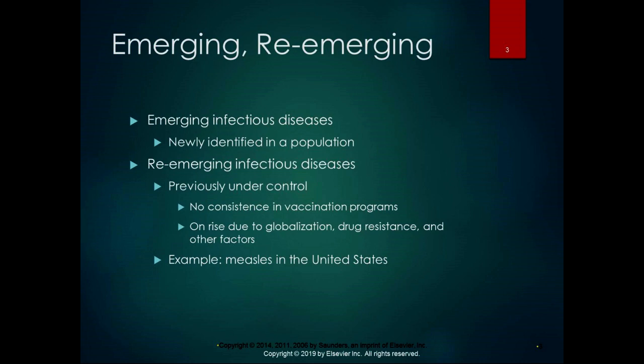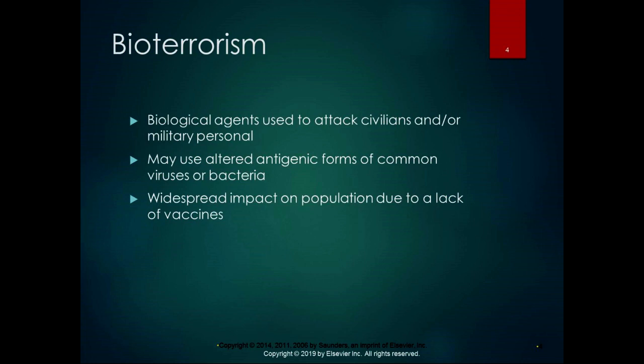Emerging infectious disease is where an existing disease is newly identified in a population. Re-emerging diseases are ones that were previously under control, and there are outbreaks because of either importation of viruses from other countries or decrease in vaccinations. Measles in the United States is a recent example — there have been some outbreaks because of decreased vaccination rates.